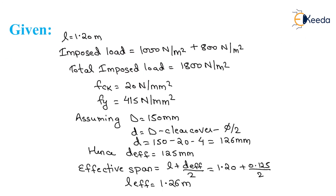Given: L equals 1.20 meter. Imposed load equals 1000 N per meter square plus 800 N per meter square. Therefore, total imposed load equals 1800 N per meter square. Fck equals 20 N per mm square and Fy equals 415 N per mm square.